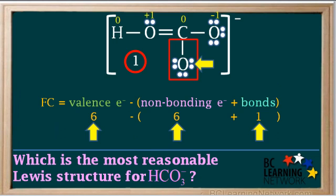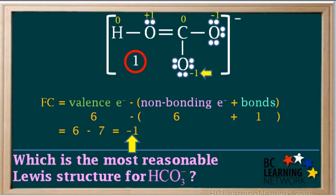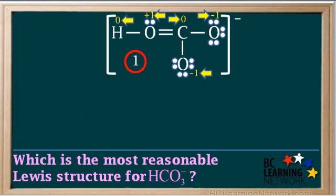This oxygen atom is the same as the previous one. It has 6 valence electrons, 6 non-bonding electrons, and 1 bond attached to it. So its formal charge is also 6 minus 7 which is negative 1. So if we add up all the formal charges on the atoms in this ion, we get 0 plus 1 plus 0 plus negative 1 plus negative 1 which gives us a total of negative 1.